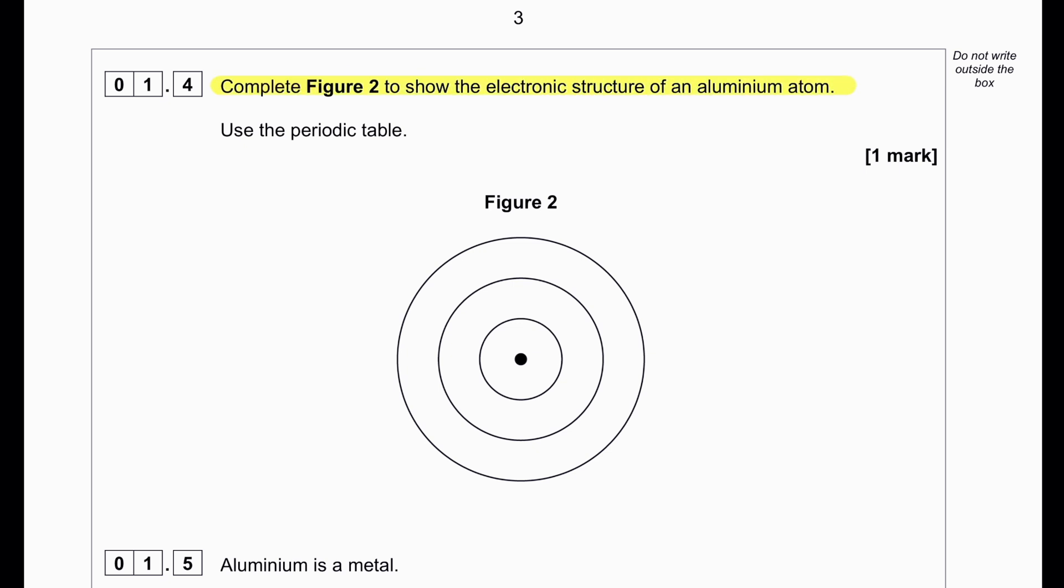Complete Figure 2 to show the electronic structure of aluminium atom. Aluminium belongs to group 3 and has a proton number of 13, so it will be 2,8,3.